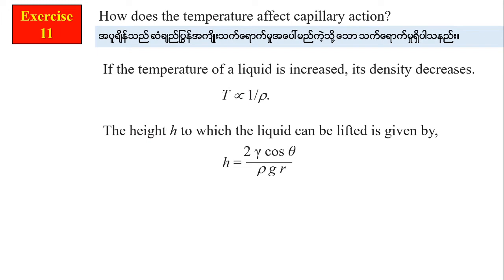The capillary height formula is: H = 2T cosθ / (ρ g r), where T is surface tension, θ is the contact angle, ρ is density, g is gravitational acceleration, and r is the radius.